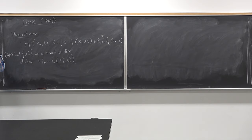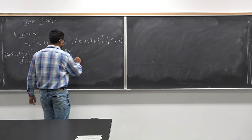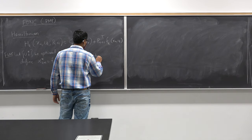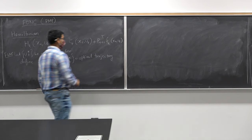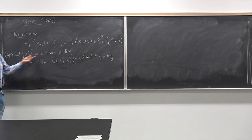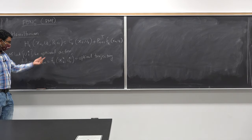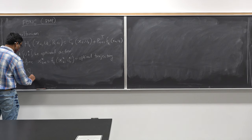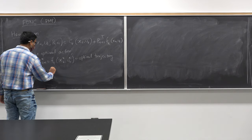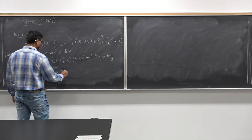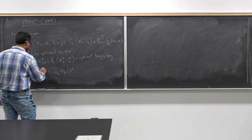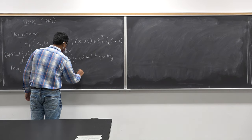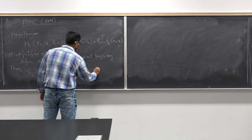Let u*_t be the optimal control actions and define the optimal trajectory. When we say trajectory, it's usually the trajectory of the state, and when we say action, it's just the action. So I have u*_t which is the optimal action and x*_t which is the optimal trajectory. The first-order necessary condition is: the gradient of J with respect to u_t equals the gradient of H_t with respect to u_t evaluated at u*_t, x*_t, u*_t, p*_{t+1}, which equals zero.